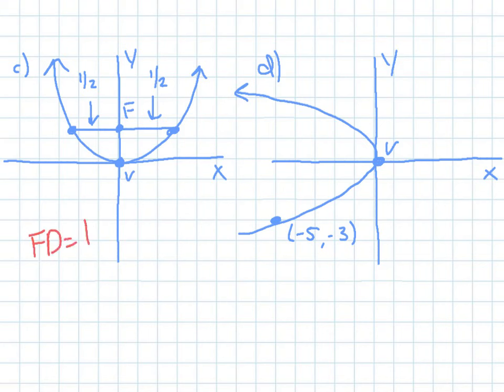And remember that the focal diameter is equal to the absolute value of 4p. Now, usually when you're solving an absolute value equation, you'd split it up into two equations. But we're not concerned with that because we just want to be able to solve for p. And then because of the orientation of the graph, it'll tell us if p is positive or negative in this case.